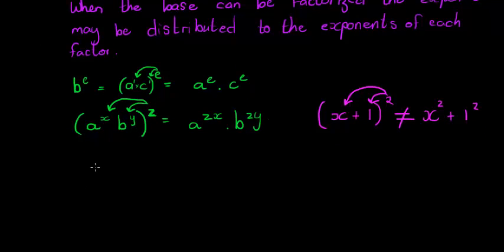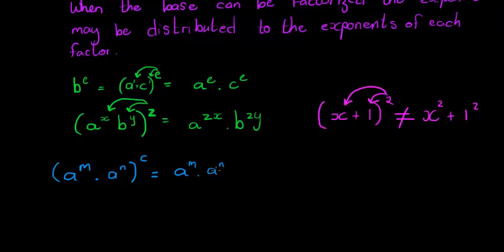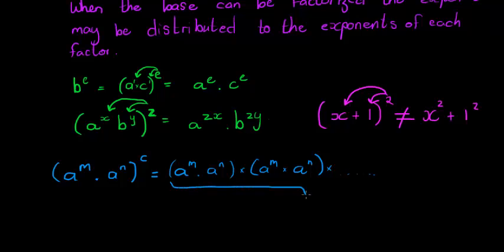Let's quickly look at the proof — why is this true? Why can I distribute it like that? Let's take m and n: say I've got a to the power of m times a to the power of n, and all of this is raised to the power of c. That means I've got a to the power of m times a to the power of n — that's my first factor — then I multiply again with a to the power of m times a to the power of n, and I do this for c times, whatever c is, a to the power of m times a to the power of n.